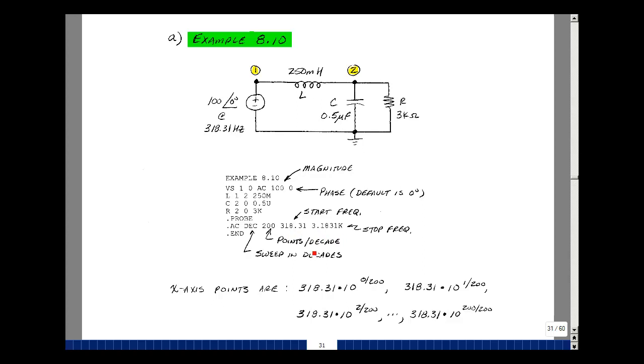Now what's actually being graphed is an equal spacing of terms on a log scale. The first point is 318.31 hertz. This is the x-axis, but we're going to multiply that by 10 raised to the 0 divided by 200. The next point will have 1 over 200, and then likewise all the way through 200 over 200. So we're going to get an equal spacing of points on a log scale.